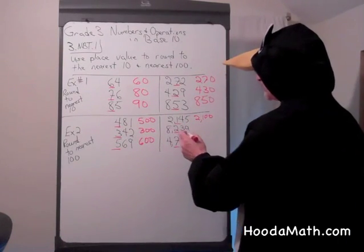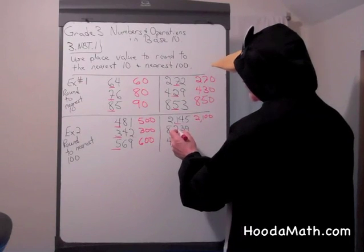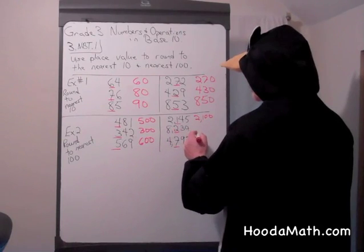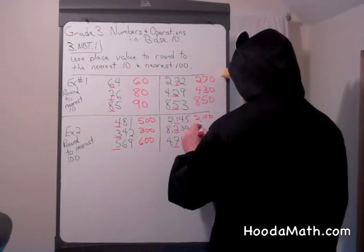For 8,239, we look to the right of the hundred, and that's a 3. 3 is less than 5, so the 200 remains the same, so it's 8,200.